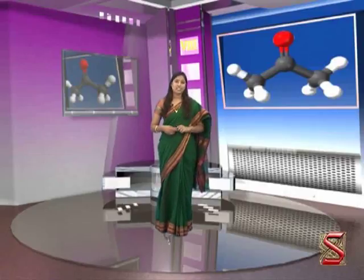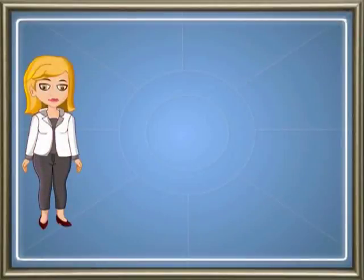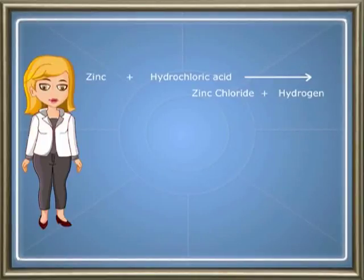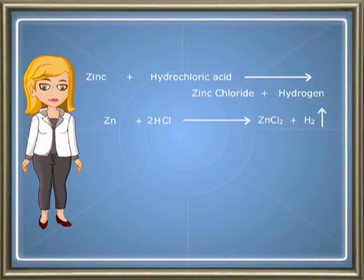Let us look at more examples on writing a balanced chemical equation. While balancing an equation, the chemical formulae of reactants and products must be kept unchanged. Only the number of molecules of the reactants and products are changed so that the total number of atoms of different elements on both sides are equal. For example: zinc reacts with hydrochloric acid to give zinc chloride and hydrogen. Write the unbalanced chemical equation using symbols and formulae, then balance it. Write an upward arrow beside hydrogen to indicate it is a gas.